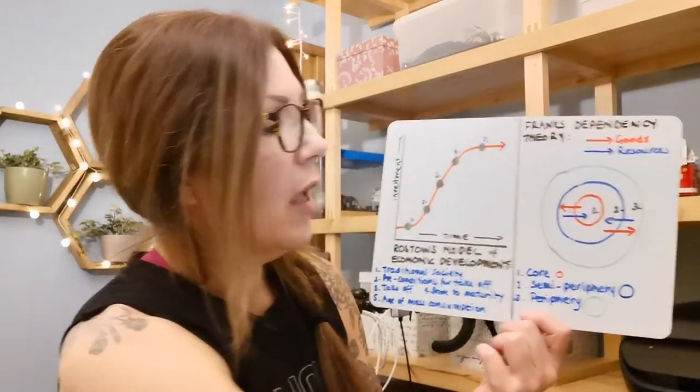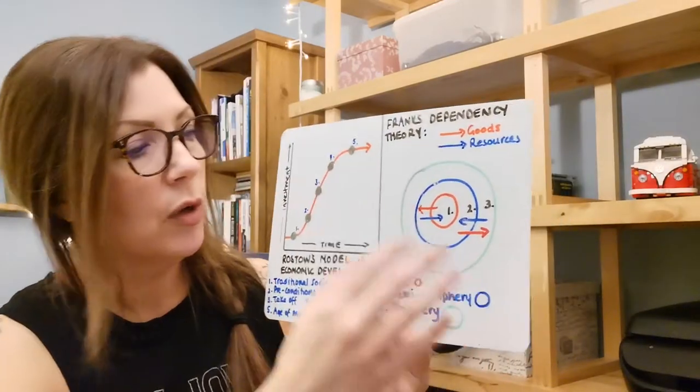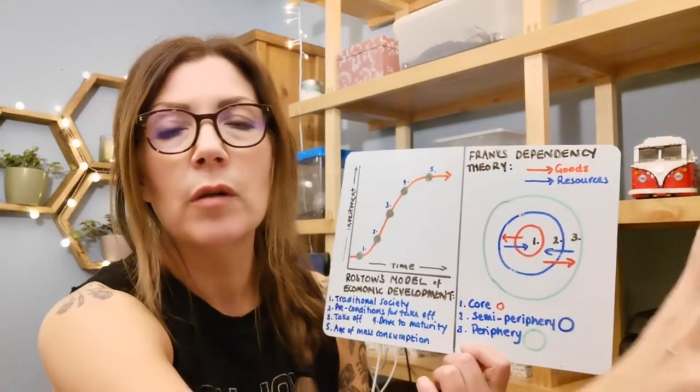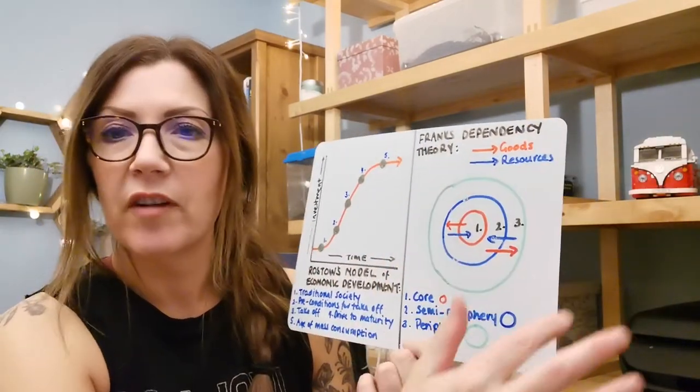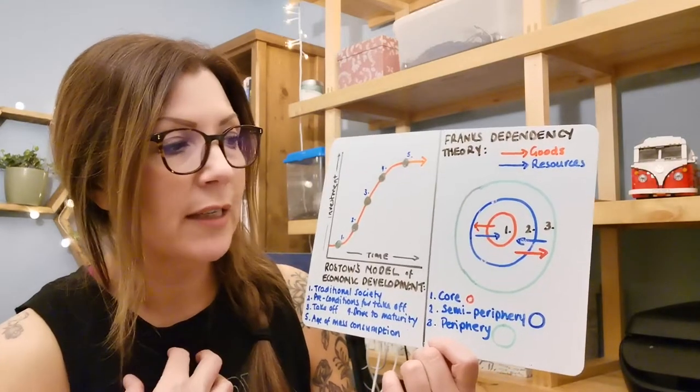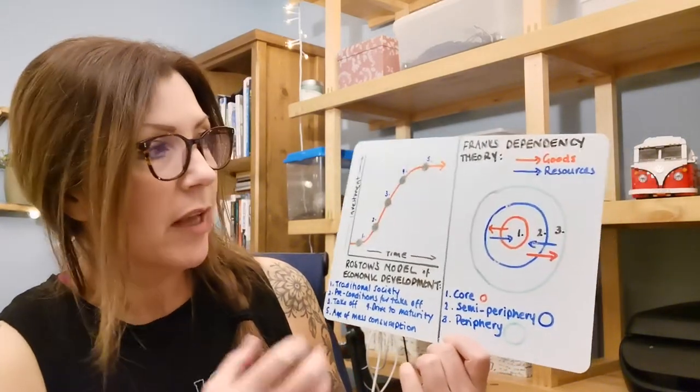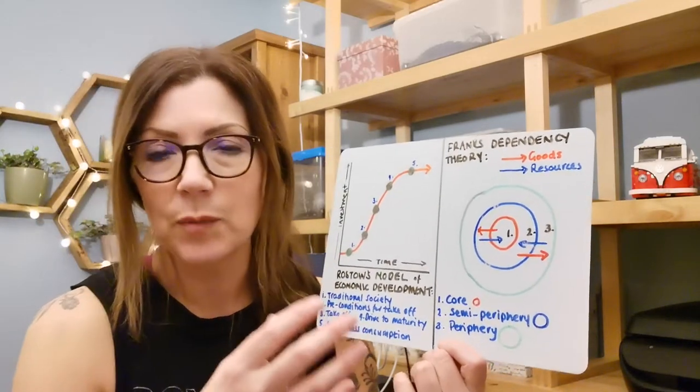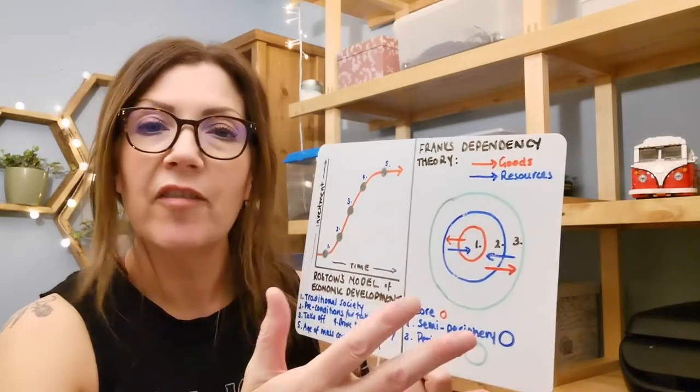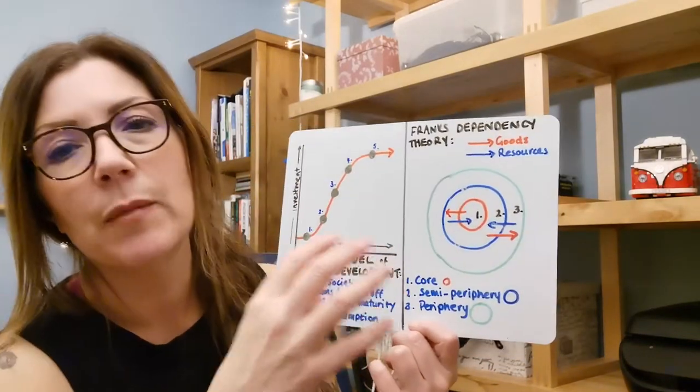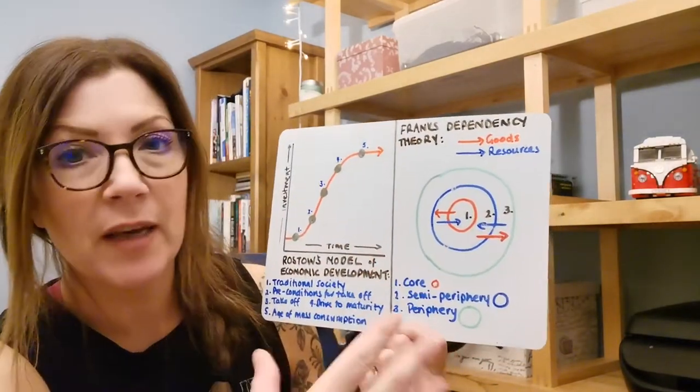He saw that there were basically two types of country. There was a core, which was the UK and Europe and North America, and there was the periphery, which was the poorer countries around the world which were providing us with raw materials. That's what Frank sees. He sees the fact that we always have to have exploitation of the periphery in order to provide the core with all of the cheap raw materials that it requires to manufacture goods.